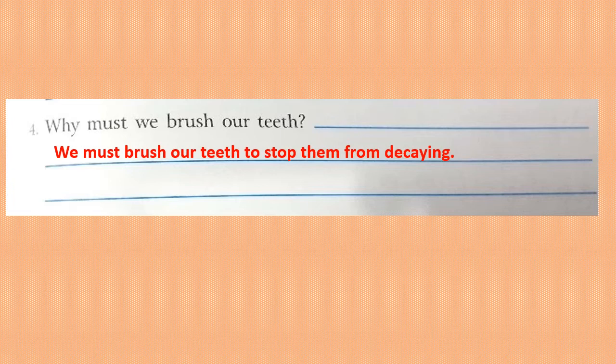T-H-E-M, Them. F-R-O-M, From. D-E-C-A-Y-I-N-G, Decaying. We must brush our teeth to stop them from decaying. Decaying means the teeth become spoiled and start rotting — cavities happen. Okay, now children, two answers you have written. Now please close the book.